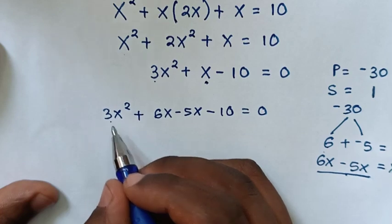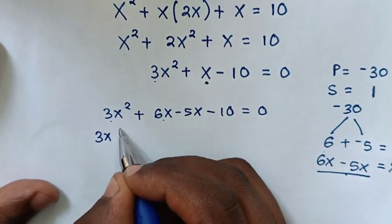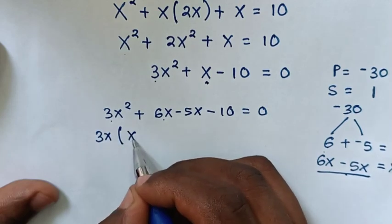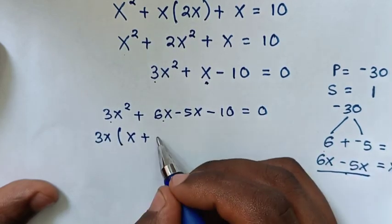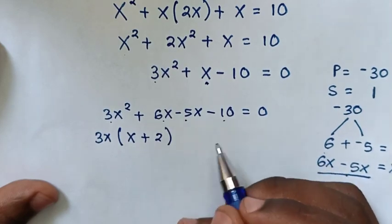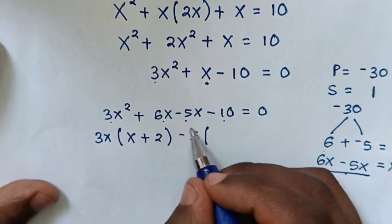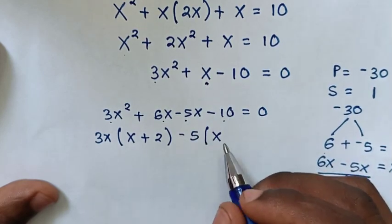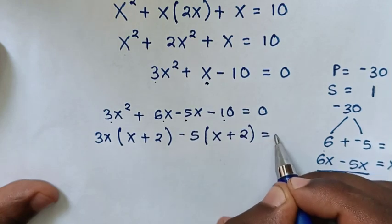In this equation, 3x is common in the first two terms. So we take 3x out of bracket: 3x bracket x plus 2 bracket. Then we take negative 5 out of the last two terms: negative 5 bracket x plus 2 bracket is equal to 0. Now x plus 2 is common, so we take x plus 2 out of bracket: x plus 2 bracket 3x minus 5 bracket is equal to 0.